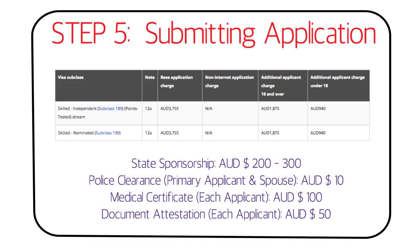Apart from the visa fee, you also need to pay for state sponsorship if you're getting a state nomination, which costs around AUD $200 to $300 depending on the state — check your respective state for the exact amount. You'll also spend money on police clearance, which is required for the primary applicant and spouse. As a rough estimate it may cost around AUD $10 if you've been residing in just one country; if you've lived in other countries over the past two years it will cost more.